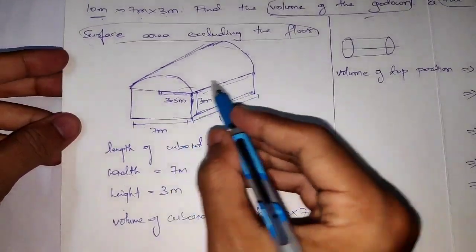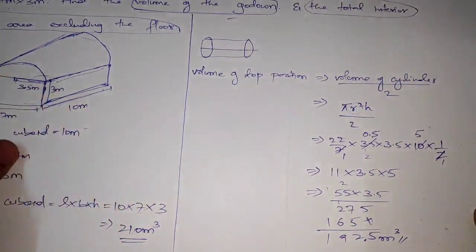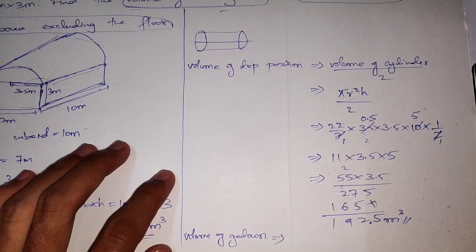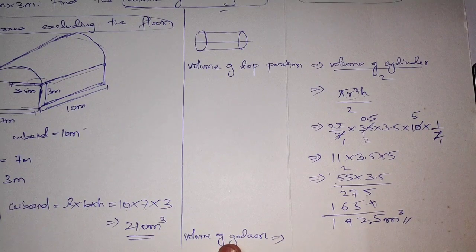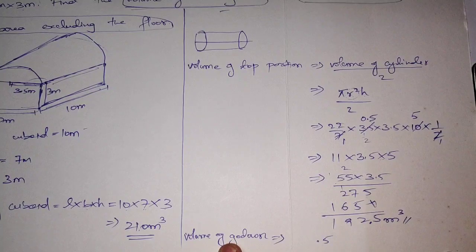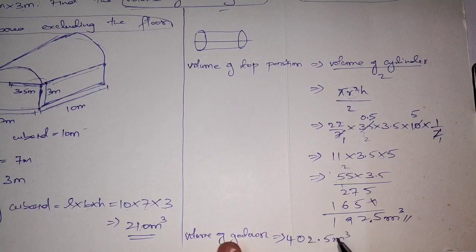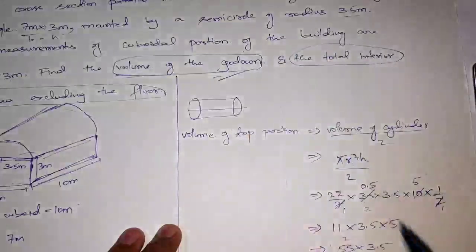Now, add the volume of the cuboid and the volume of the top portion. Volume = 210 + 192.5 = 402.5 m³. So the total volume of the building is 402.5 m³.